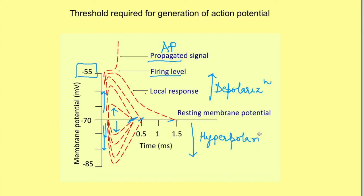The change in potential more towards the negative side compared to RMP is known as hyperpolarization. Action potential will only occur when the change in potential is towards the positive side — threshold is towards the positive side — while graded change in potential can be towards the positive as well as the negative side. Note that this is true for nerve but not for skeletal muscle, because in skeletal muscle whenever it is stimulated by a nerve it always causes depolarization — it is always an excitatory signal and we never see hyperpolarization.